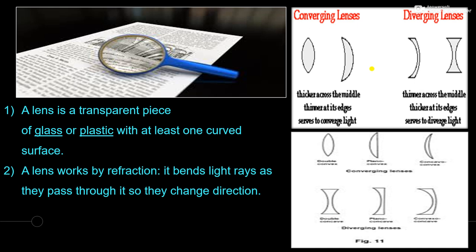What is a lens? A lens is a transparent piece of glass or plastic with at least one curved surface. You can see in the figure over here, there are two types of lenses shown — one is a converging lens and the other one is a diverging lens. At least one surface is curved and that curved surface can be made of glass or plastic.